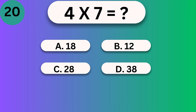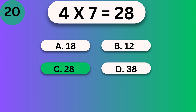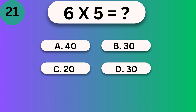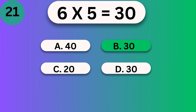4 times 7. 4 times 7 is 28. 6 times 5. 6 times 5 is 30.